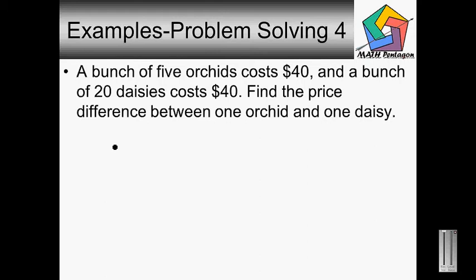Okay, let's do a few examples on problem solving four. A bunch of five orchids costs forty dollars and a bunch of twenty daisies costs forty dollars. Find the price difference between one orchid and one daisy. Well, you have to first find the price of one orchid. And so you need to divide forty dollars by five to find the answer for that question.